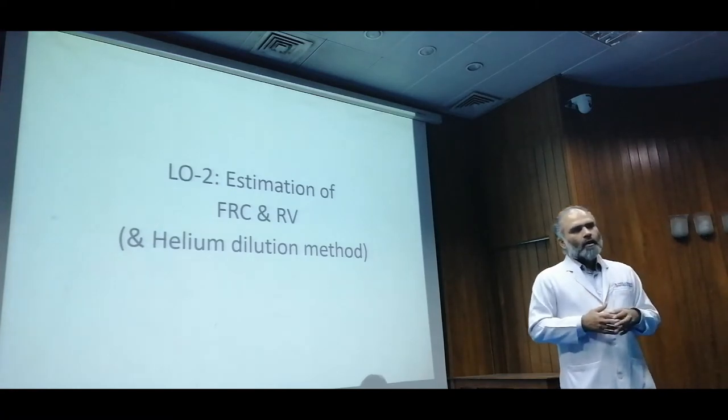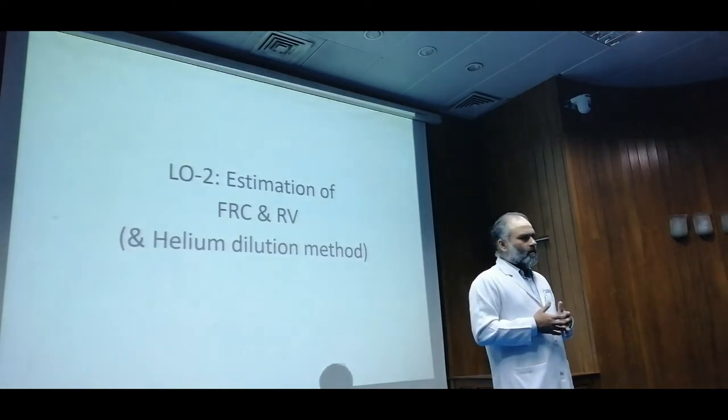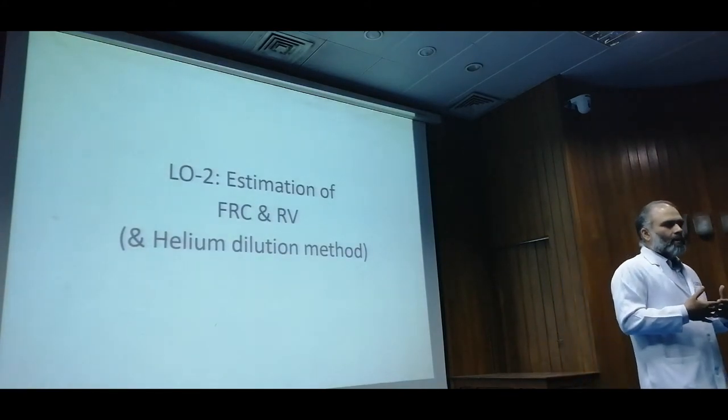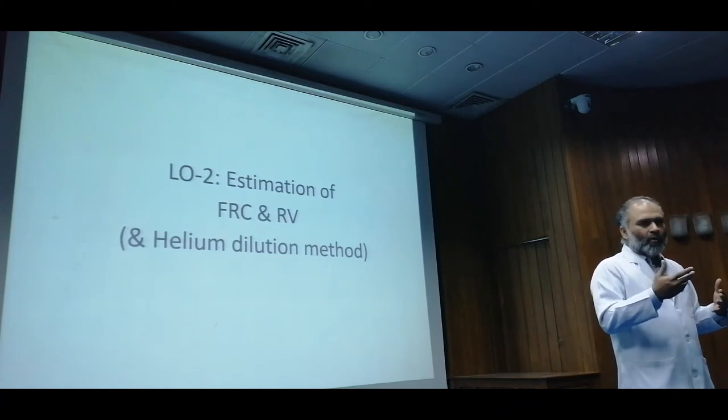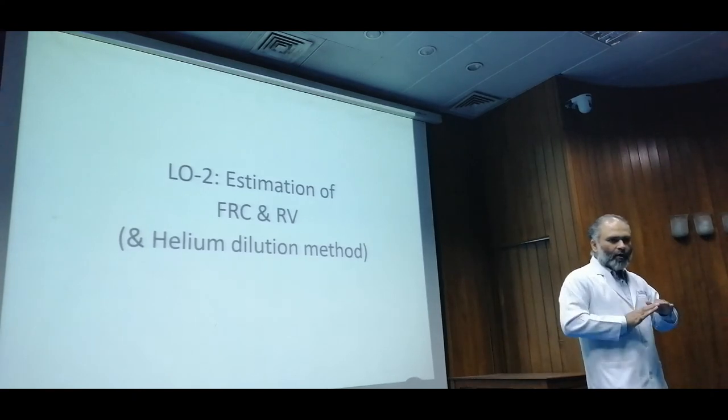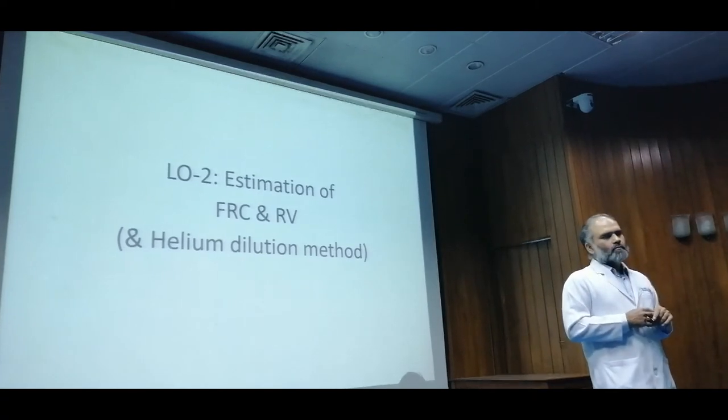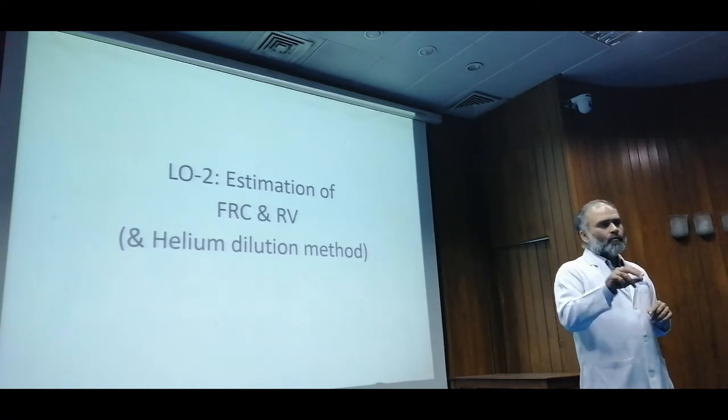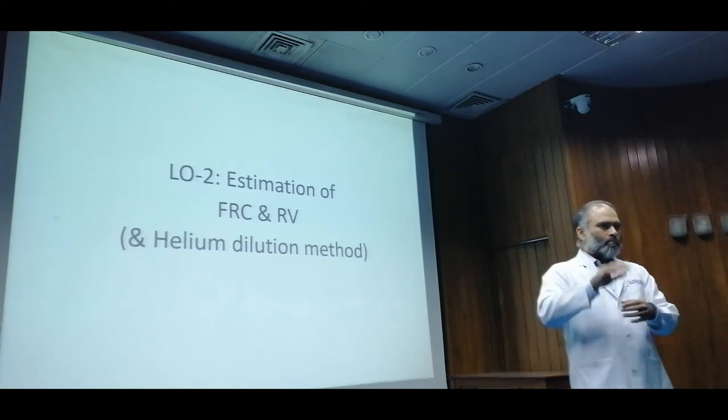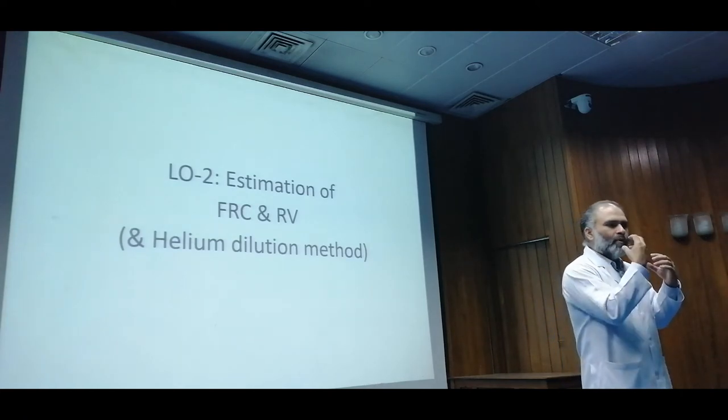Helium dilution method. Remember the formula C1V1 equals C2V2? Everyone knows this. You must have dealt with it in chemistry lab. If you have anything unknown, any volume unknown, but you have three parameters of these known, you can derive the fourth one. C1 is known, V1 is known, C2 is known, you can derive V2. Obviously mathematics brings C2 at the bottom as the denominator. You find V2. Now what has this got to do with the lung? Everything.